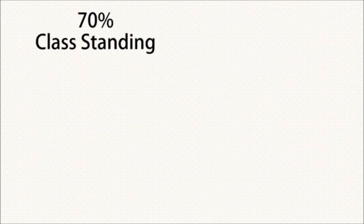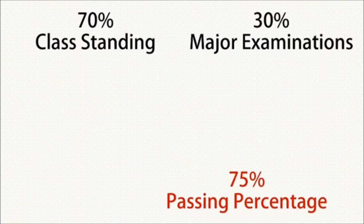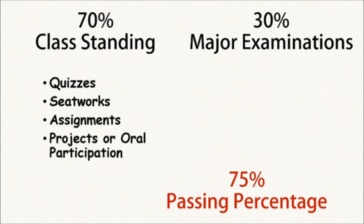Now let's get to know the university grading system. The University of Cebu adopted the 70-30 grading scheme with 75% as the passing percentage: 70% class standing and 30% major examinations. The class standing is divided into four components, namely quizzes at 40%, seat works at 20%, assignments at 10%, and projects or oral participation at 20%.